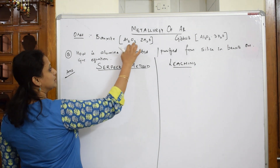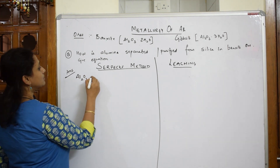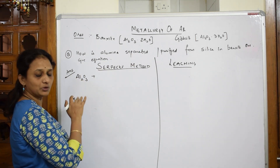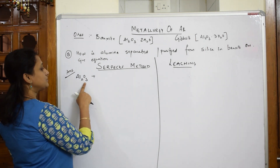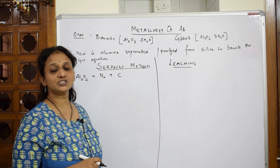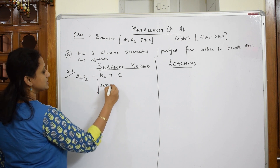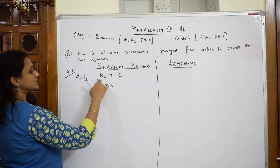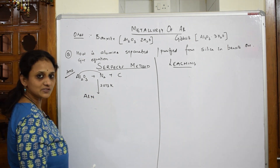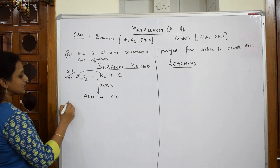In the Serpex method, we first take the metal oxide Al₂O₃ and combine it with two important reagents: nitrogen and the reducing agent coke. This combination is carried out at 2073 Kelvin. The important products are aluminium nitride (AlN) and carbon monoxide (CO) as a byproduct.